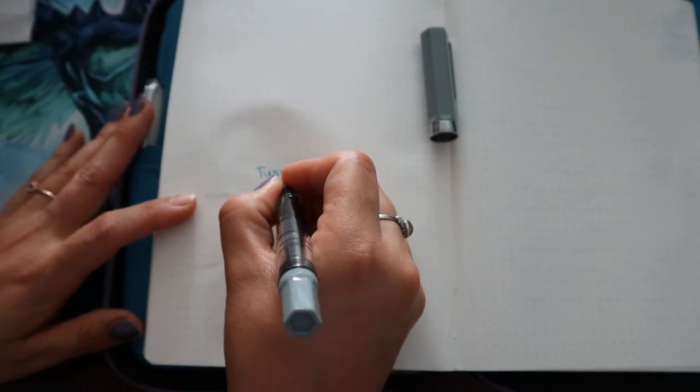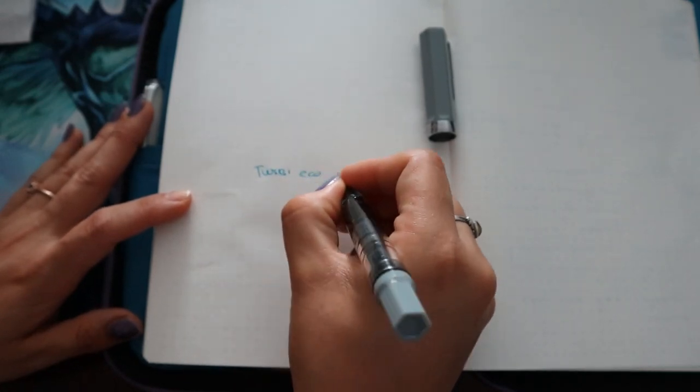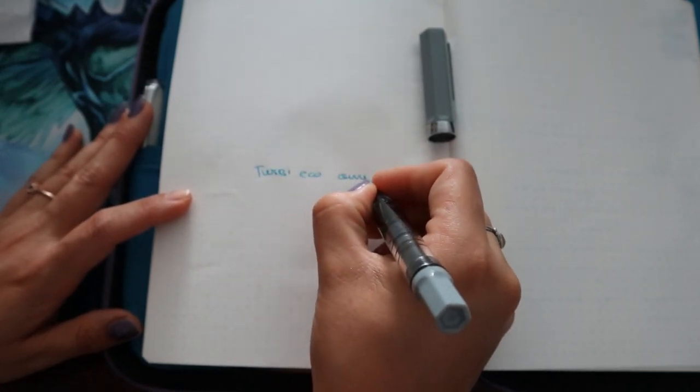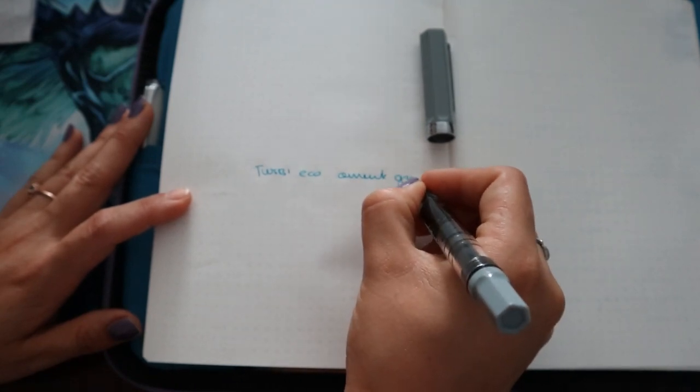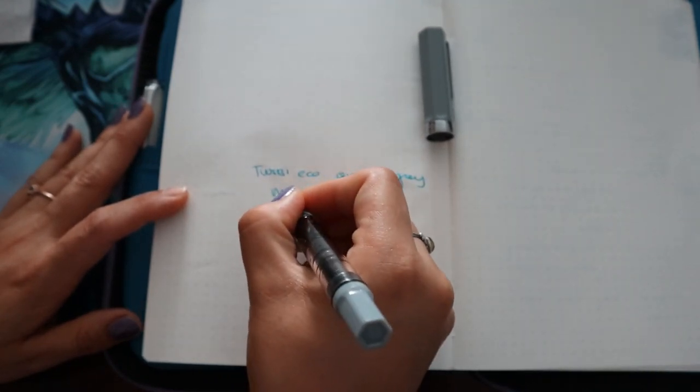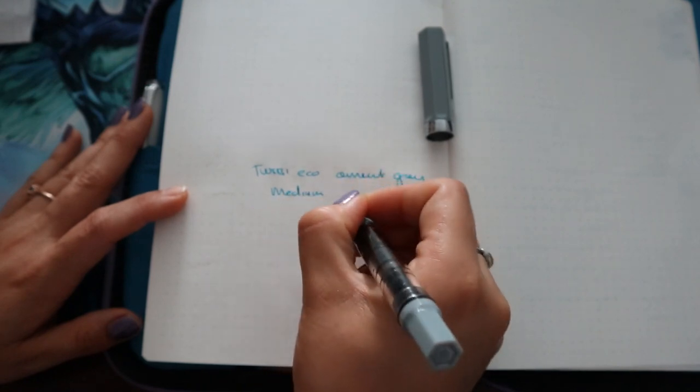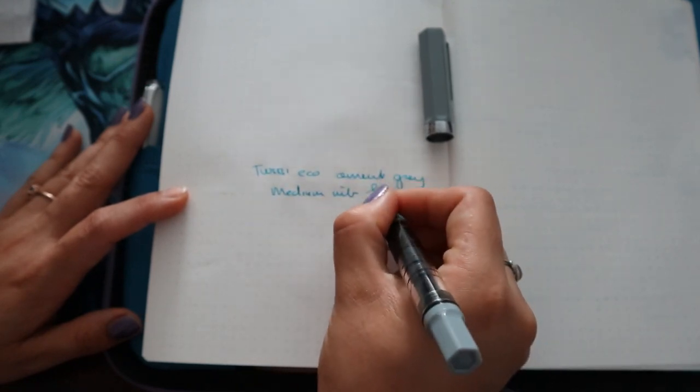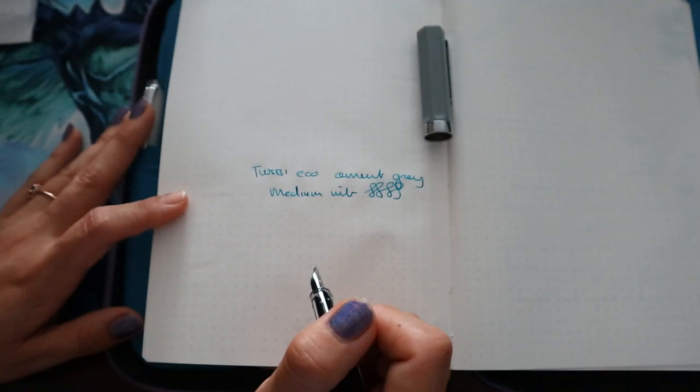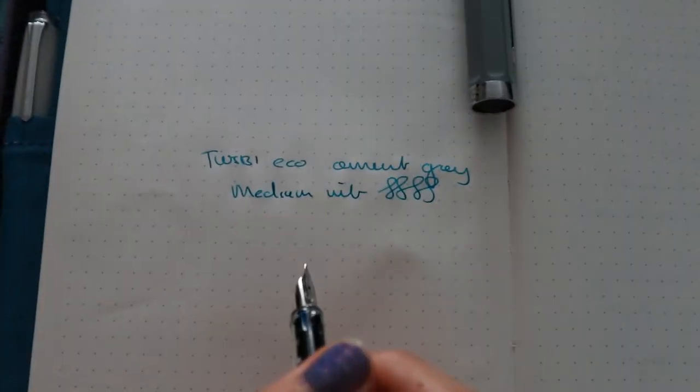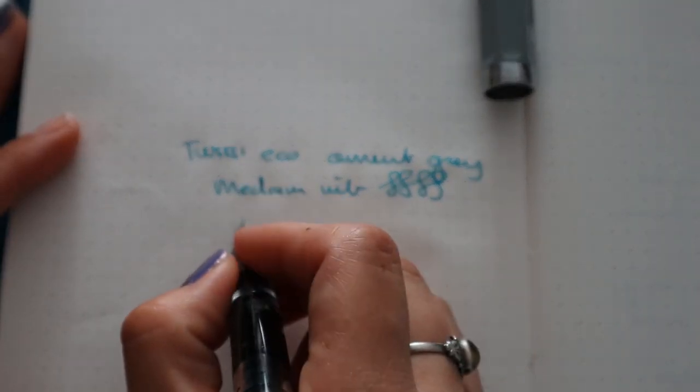The TWSBI Eco with a cement gray coloring and then a medium nib. It's a very smooth medium nib. Let's zoom in a little bit. It's a very good nib.